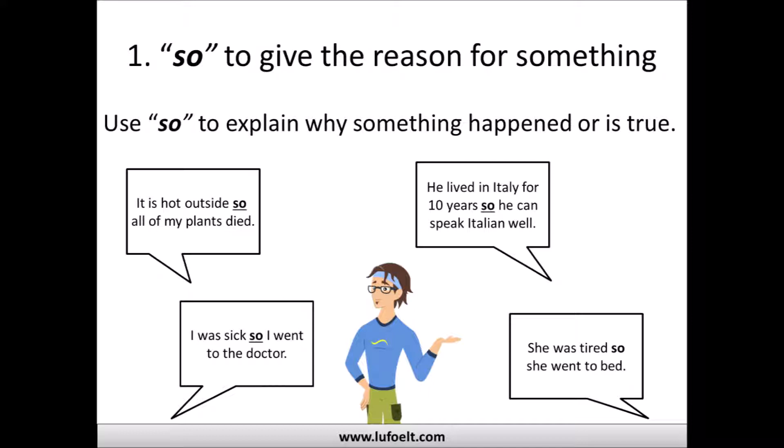The first way: use 'so' to give the reason for something — to explain why something happened or why it is true. For example: 'It is hot outside so all of my plants died,' 'I was sick so I went to the doctor,' 'He lived in Italy for 10 years so he can speak Italian well,' 'She was tired so she went to bed.' There's a cause-and-effect relationship here.